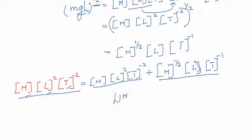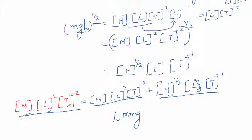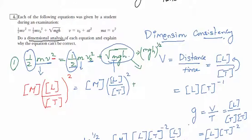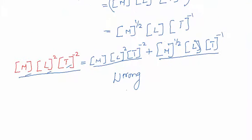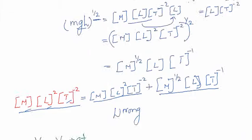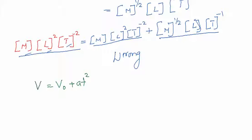This M^(1/2)·L·T⁻¹ is not consistent with the M·L²·T⁻² of the other terms, so the first equation is dimensionally wrong — and if the dimensions are wrong, the formula is also not correct. The second equation to analyze is V = V₀ + ½AT².